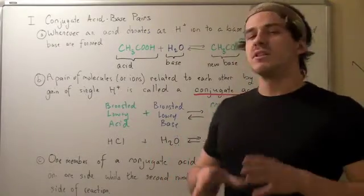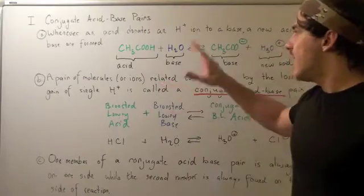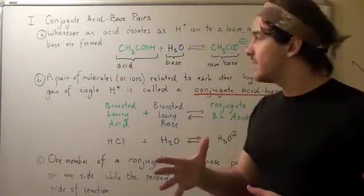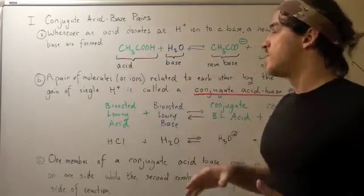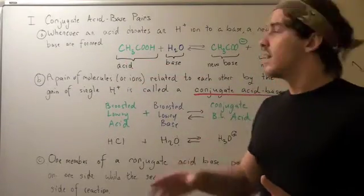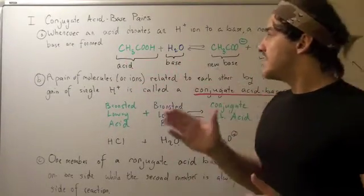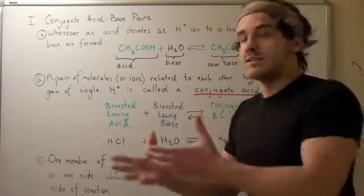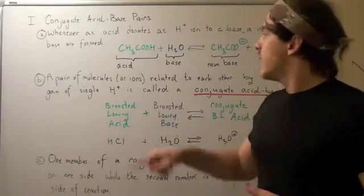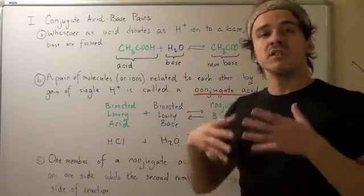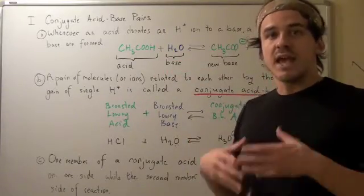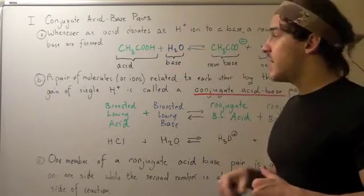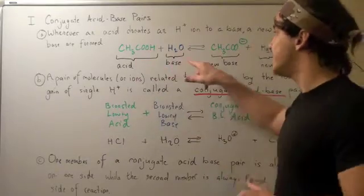Let's look at the reaction of acetic acid and water. Our Brønsted-Lowry acid is acetic acid, and our Brønsted-Lowry base is water, because acetic acid has an extra H-ion it can donate, and water has a lone pair of electrons on its oxygen, giving it the potential to gain a proton.